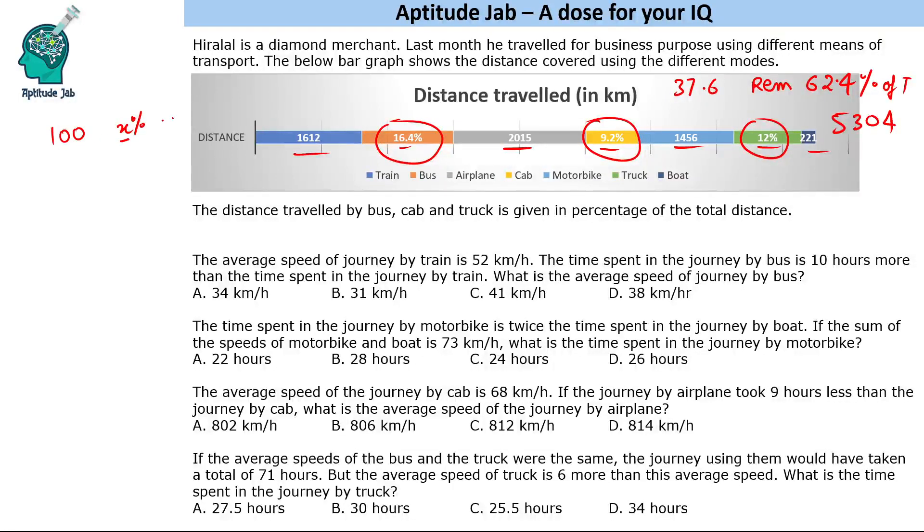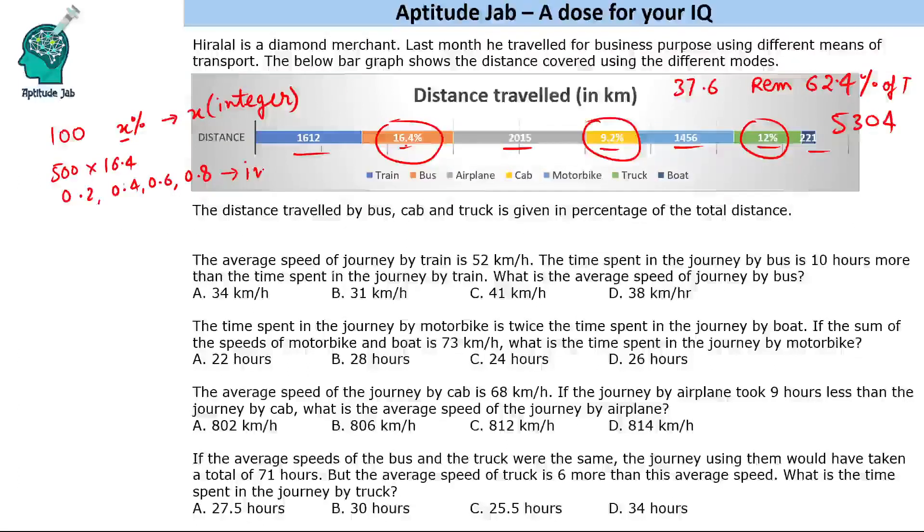If you know that for every 100, any percentage will be an integer if x is an integer. Now here the percentage is given 16.4. So 100 into 16.4 cannot be an integer, but if you take 500 into 16.4 or any number ending in 500 into 0.2, 0.4, 0.6, 0.8, these will give you integer values.